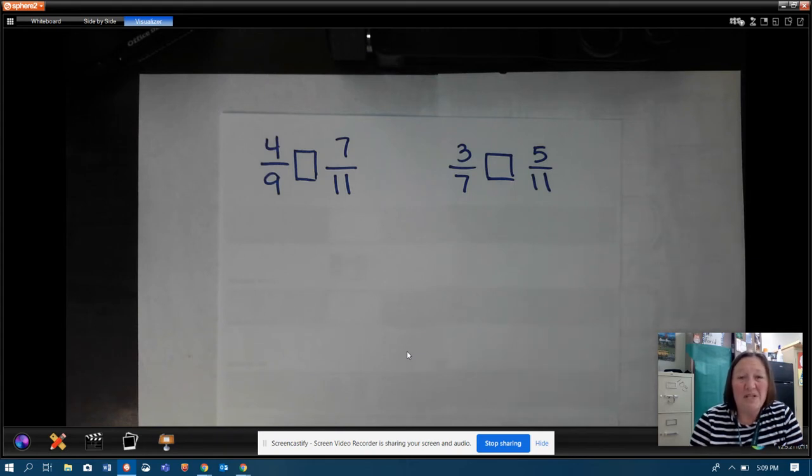If you remember, we said that decimals show parts of a whole, just like fractions show parts of a whole. And we already know how to compare decimals. We line the numbers up by their decimal points and we start looking at the greatest place value. We've done that since the beginning of the year. So if we convert these fractions into decimals, then we can just compare the decimal numbers.